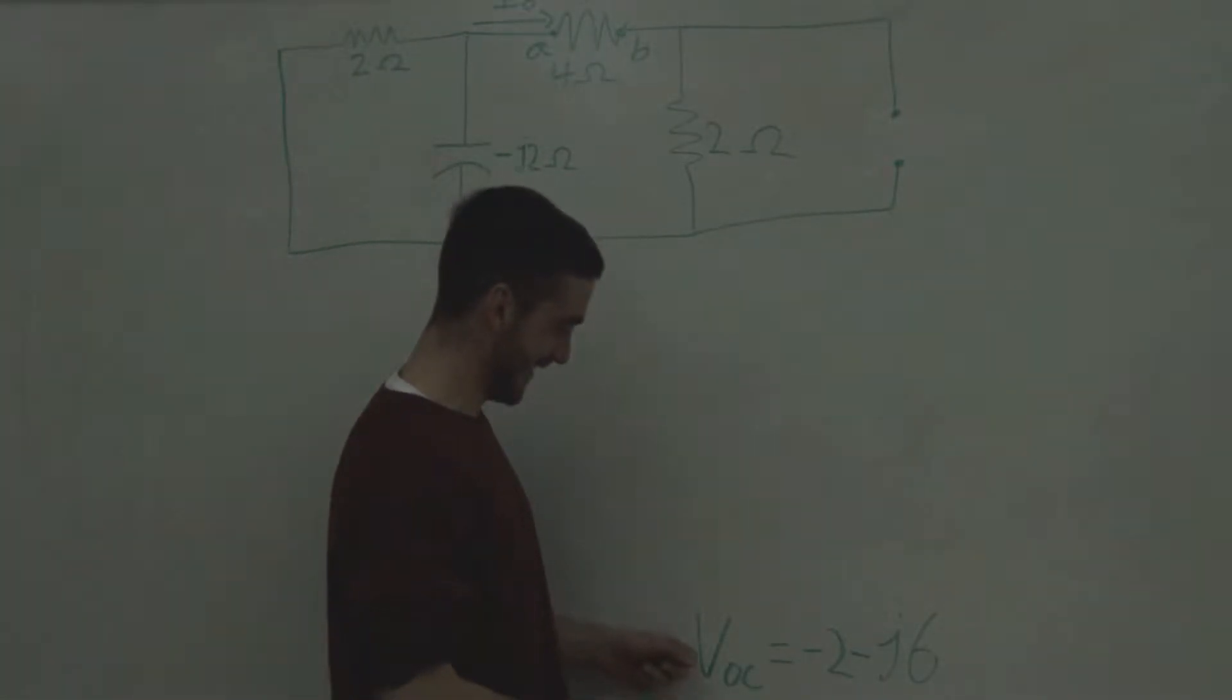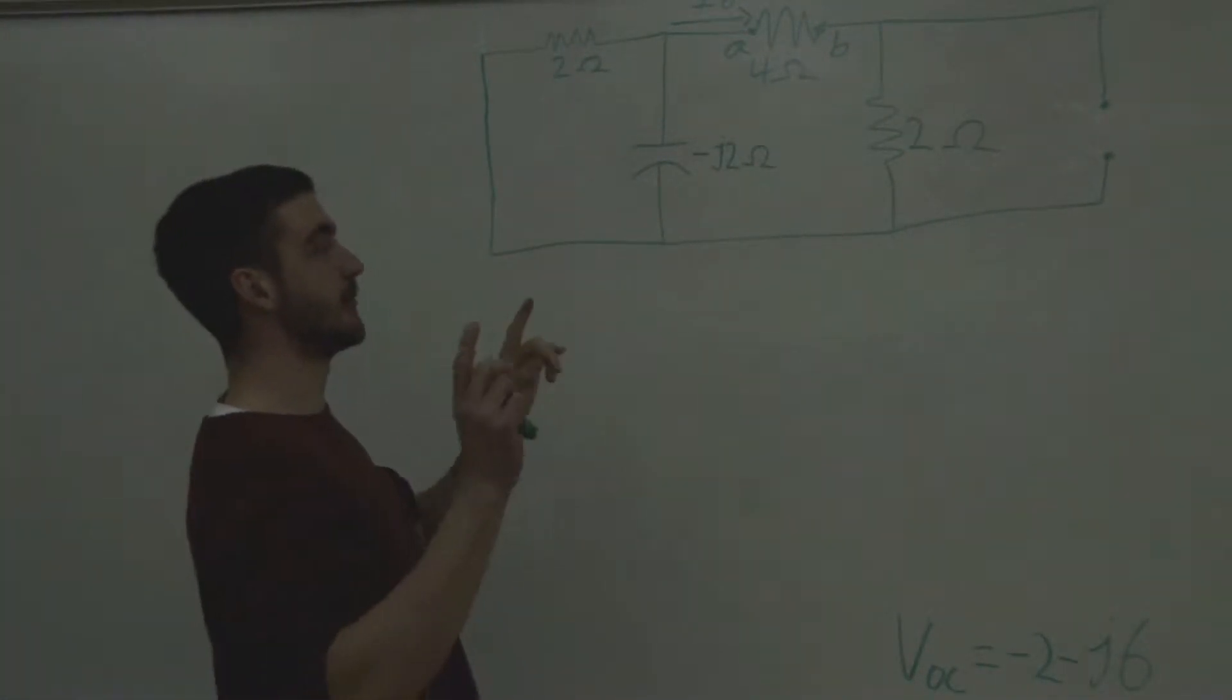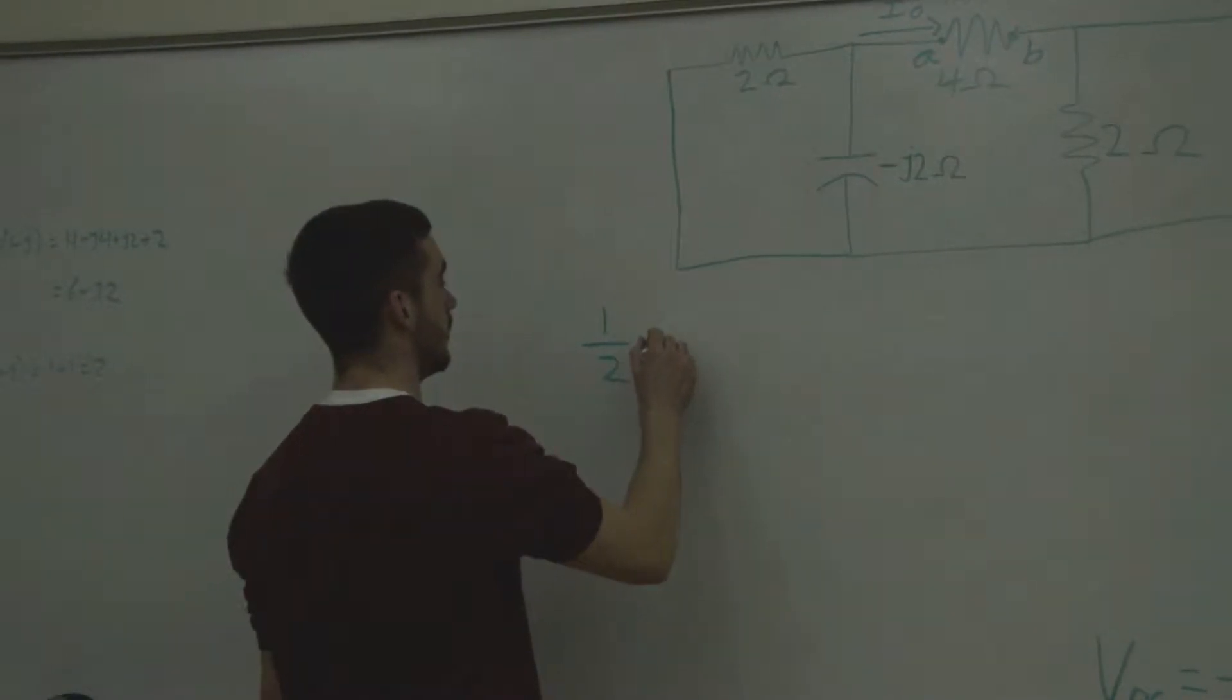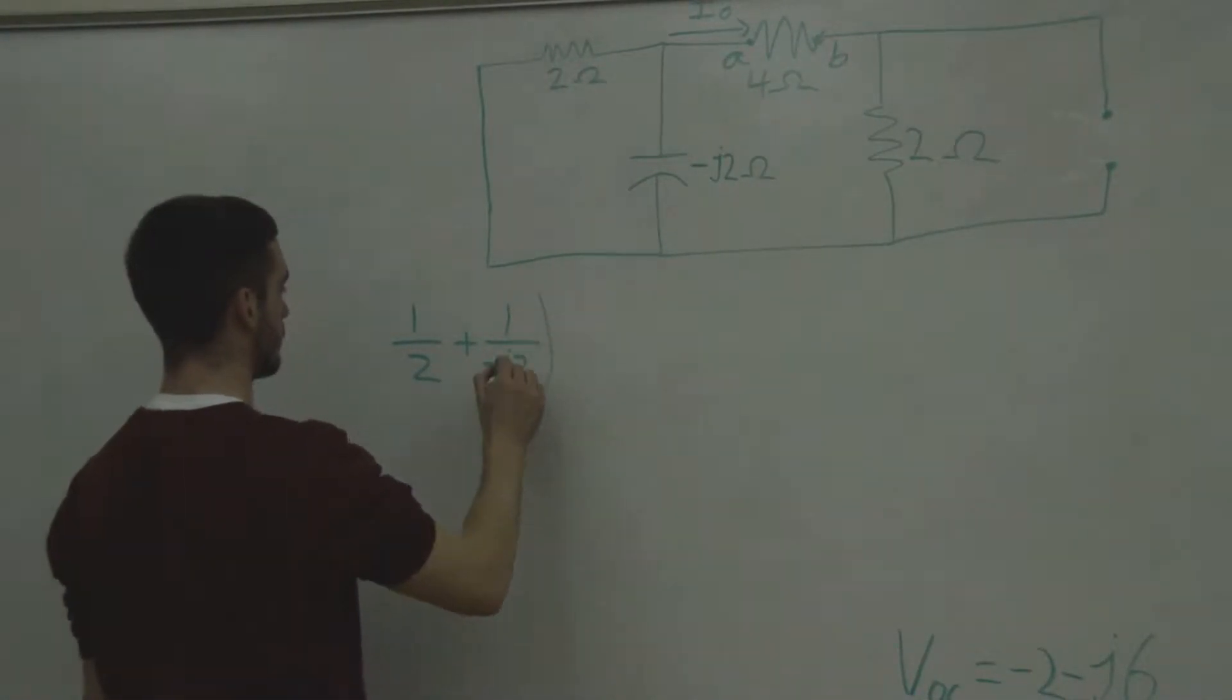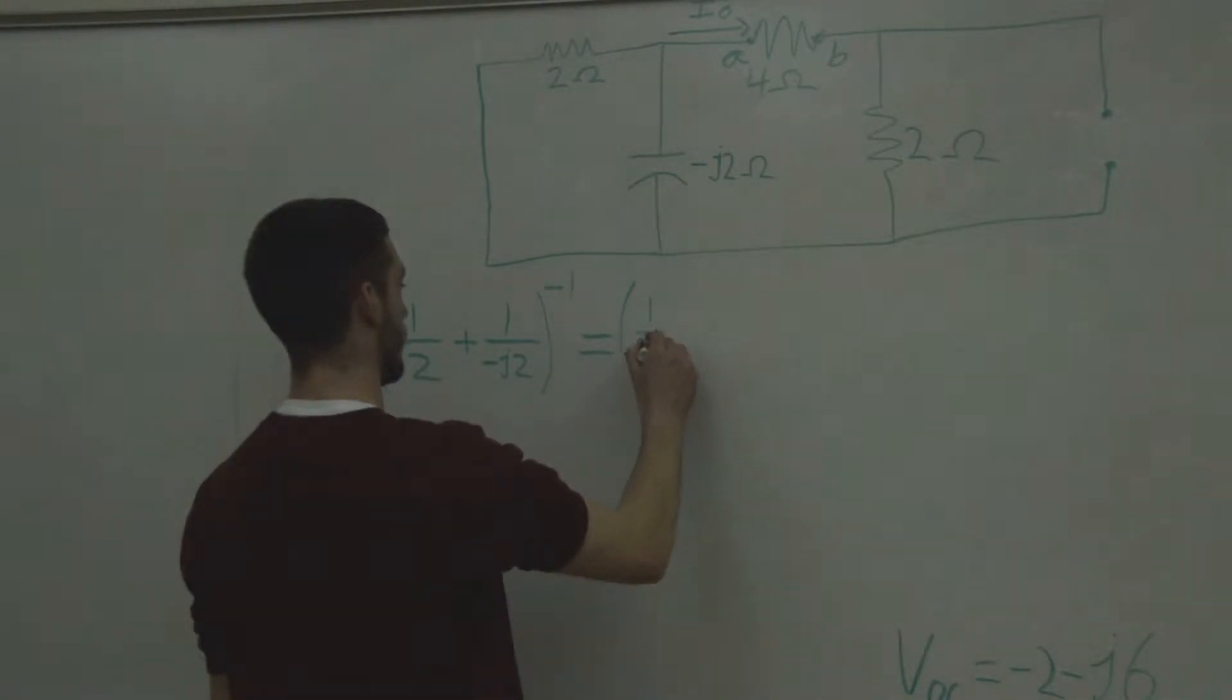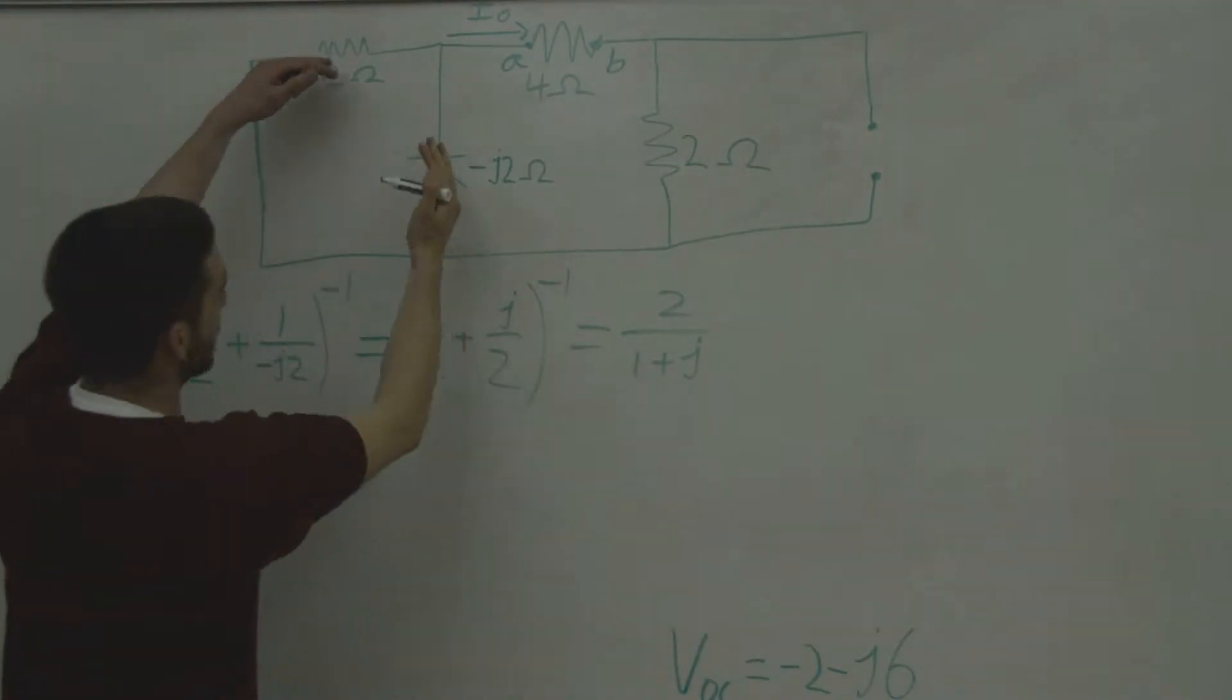Now that we've found our open circuit voltage, we're going to find our Thevenin resistance. What we've done is we've opened up our current source over here, and we've shorted our voltage source here. And what we need to do is find the parallel impedance between these two branches, and then put that in series with that impedance right there. So we'll have these two in parallel: 1 over 2 plus 1 over negative J2 to the negative 1. This is the parallel impedance right here. And if you use your properties of J, you'll see that this equals 1 over 2 plus J over 2 to the negative 1, and that equals 2 over 1 plus J. So that's your parallel impedance between those two branches.